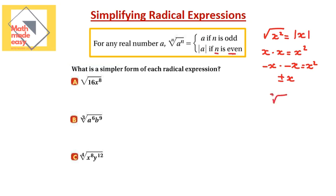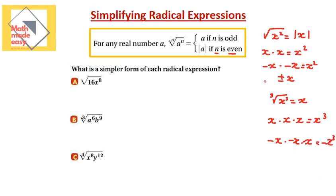What if the index is odd? The cubic root of x cubed equals x only, because negative x times negative x times negative x gives negative x cubed — a negative result — so there is only one solution. If the index is odd, you have one solution and write just x. If the index is even, you have two solutions, positive and negative, which we express as absolute value.